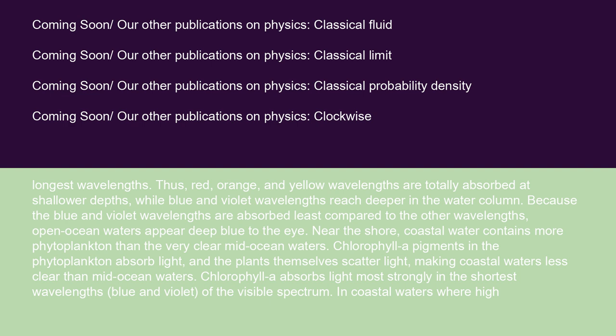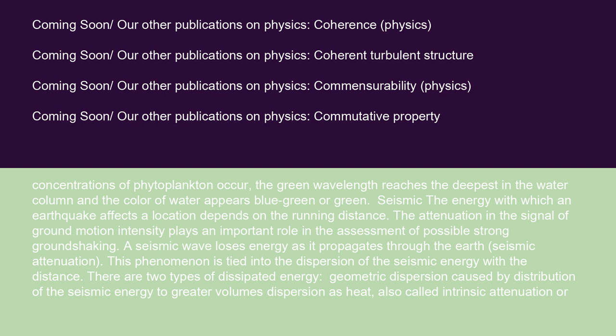Because blue and violet wavelengths are absorbed least, open ocean waters appear deep blue to the eye. Near the shore, coastal water contains more phytoplankton than clear mid-ocean waters. Chlorophyll A pigments in the phytoplankton absorb light, and the plants themselves scatter light, making coastal waters less clear. Chlorophyll A absorbs light most strongly in the shortest wavelengths — blue and violet — of the visible spectrum. In coastal waters where high concentrations of phytoplankton occur, the green wavelength reaches the deepest, and the color of water appears blue-green or green.